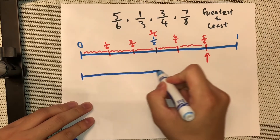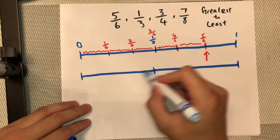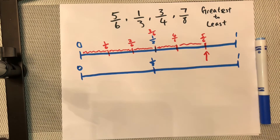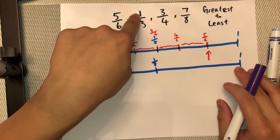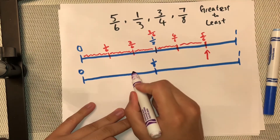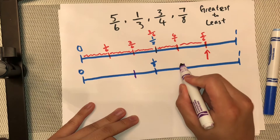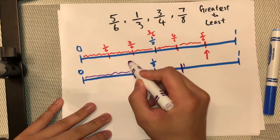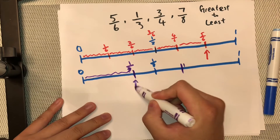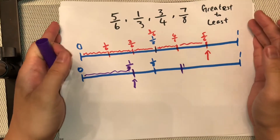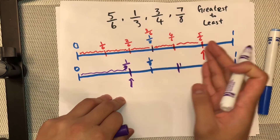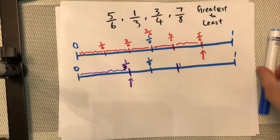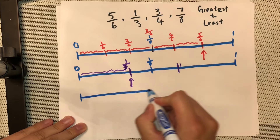Now I'll draw another number line below to show 1/3. For one third, I need three equal parts and I'm only counting one. So I have one third right here. It's really important that all your number lines are the same length so you can see which one is greater and which is closer to zero.